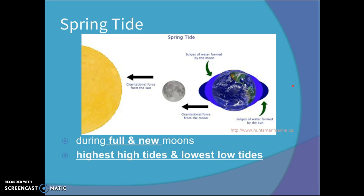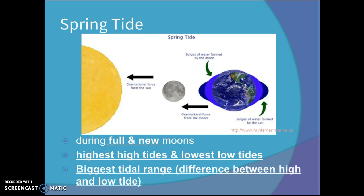These are the highest high tides and the lowest low tides. And so that creates the biggest tidal range, or the biggest difference between the high and the low tide at this time.